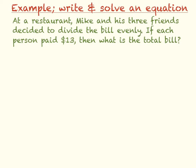Example 2. At a restaurant, Mike and his three friends decided to divide the bill evenly. If each person paid $13 total, what was the total bill? We're going to call the total bill B. We don't know the total bill, but we know that each person, when it was divided among them, paid $13. So we're going to equal $13.